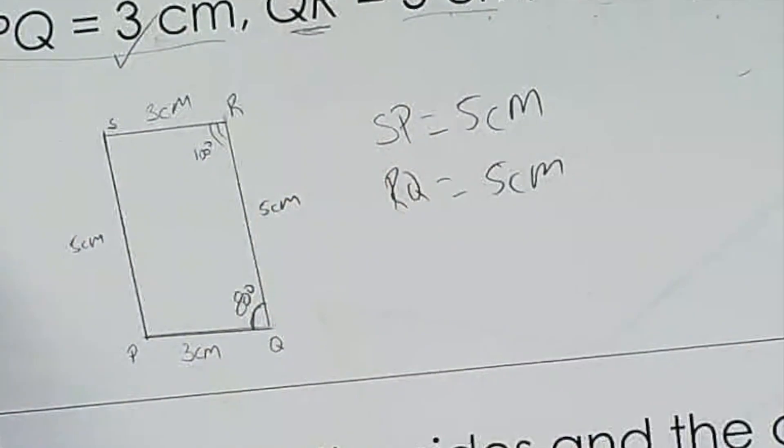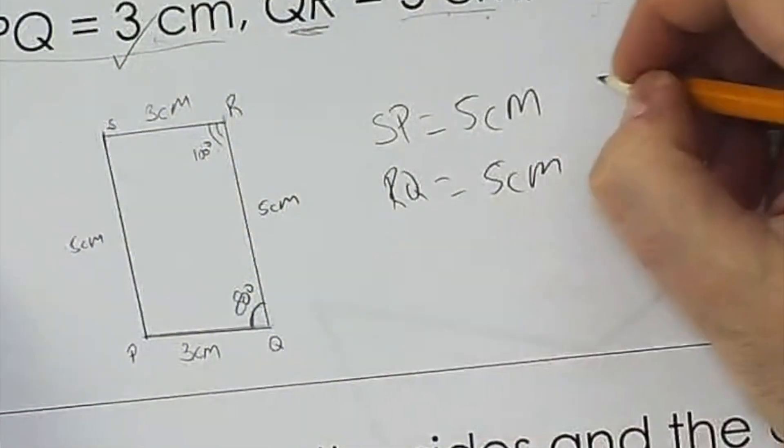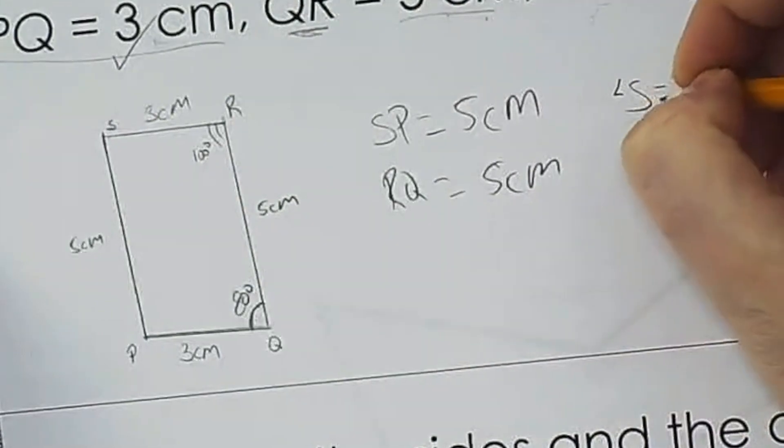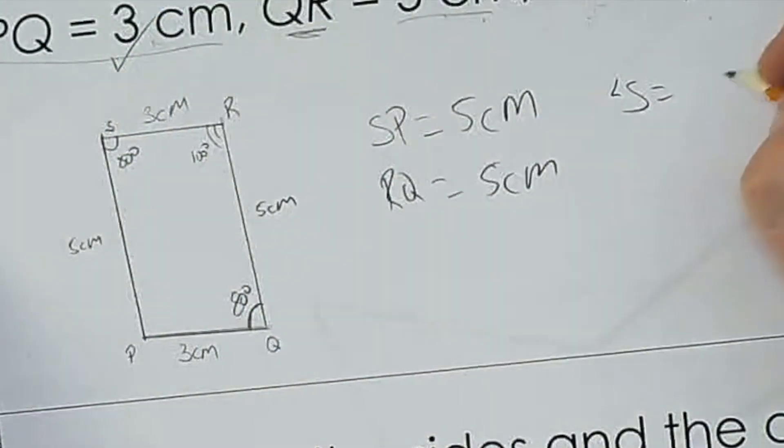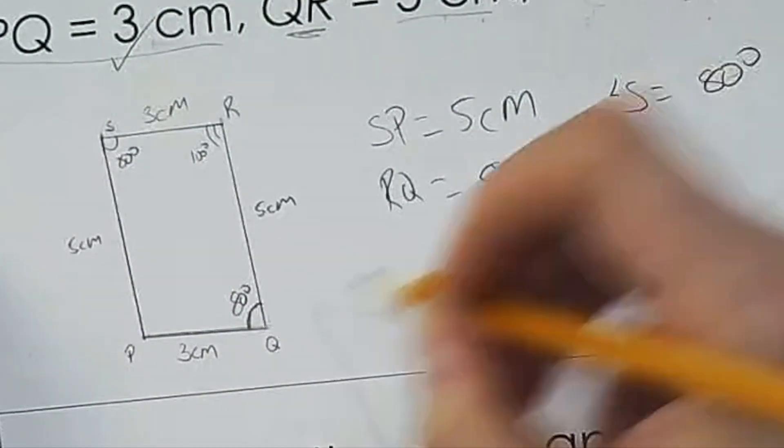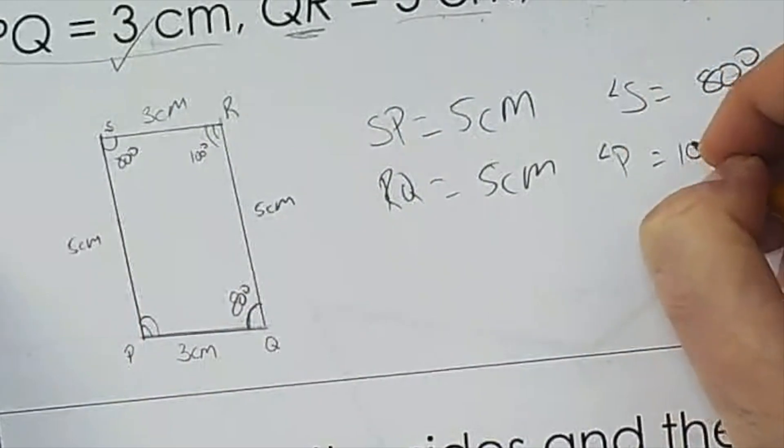So you would label that. And inside, you're going to see that the angles are the same as well. Angle S is 80 degrees. And the last one, P, is 100 degrees.